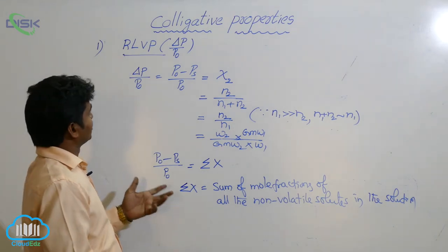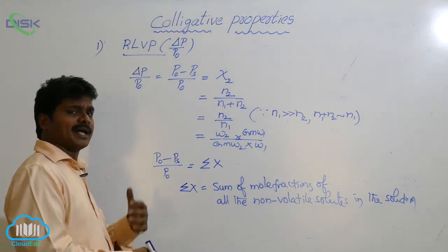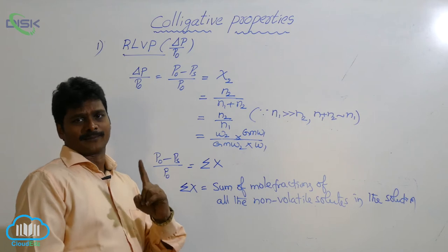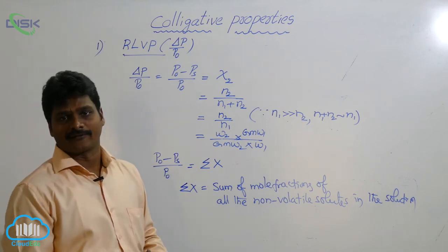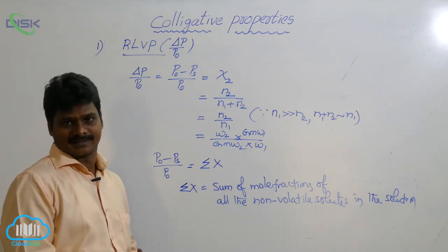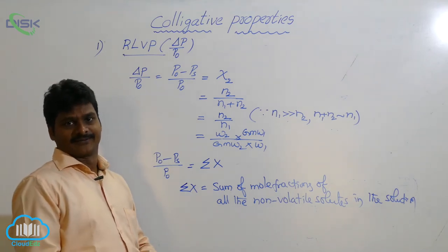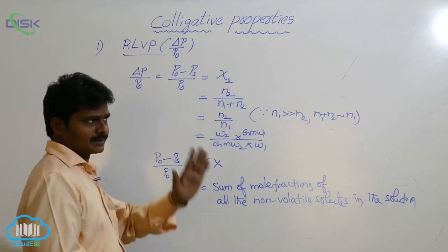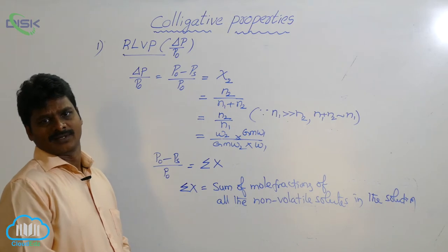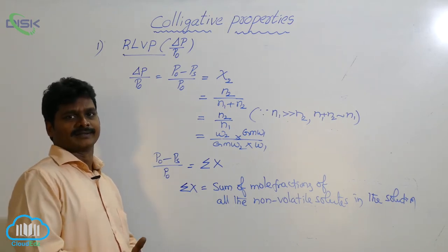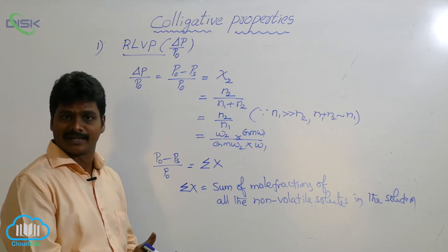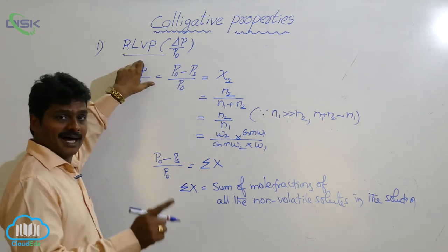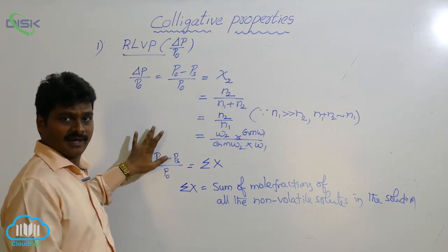The purpose of RLVP and all colligative properties is to determine the molecular weight of unknown substances. In quantitative analysis, for the determination of unknown organic or other compounds, we use colligative properties as convenient methods. RLVP is also used for the determination of molecular mass of an unknown substance.